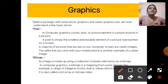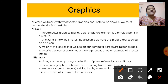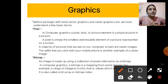The selfie that you click with your mobile phone is an example of a raster image. A bitmap means an image made using a collection of pixels. The picture which is a collection of pixels is known as a bitmap image.